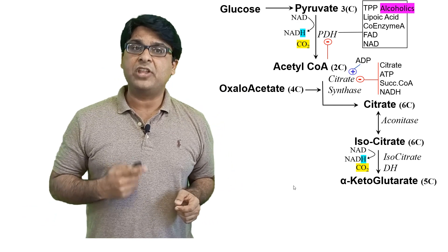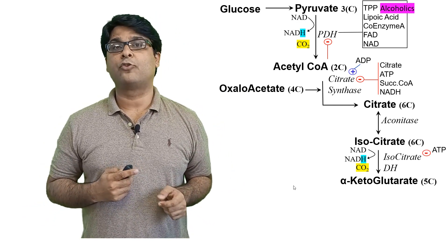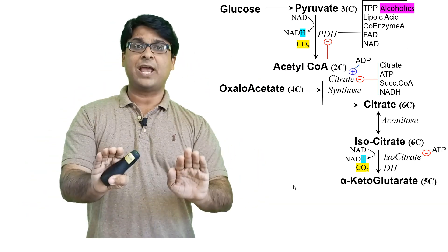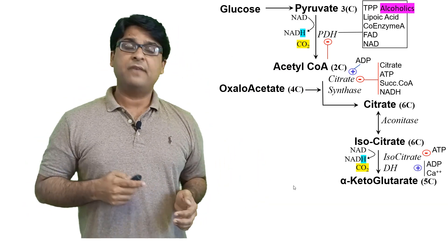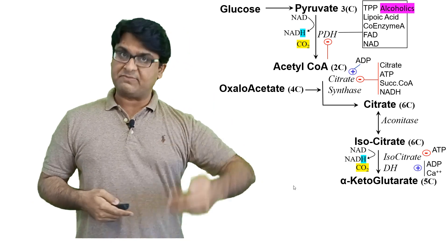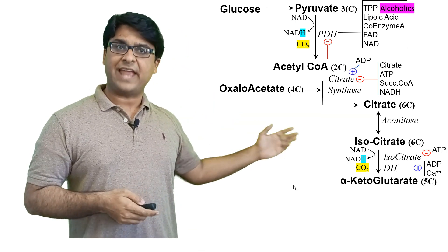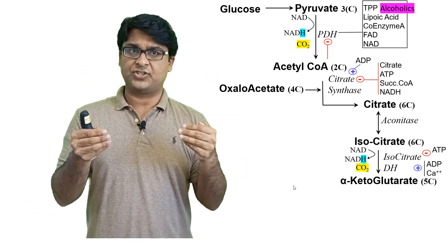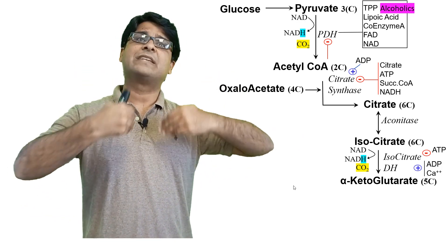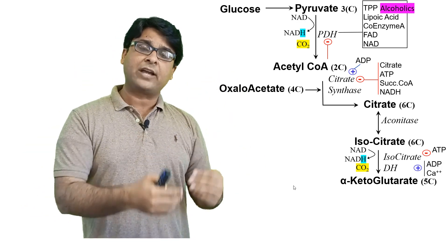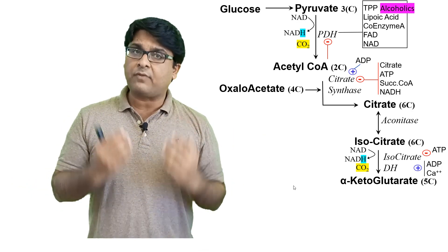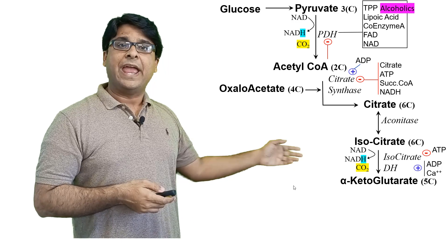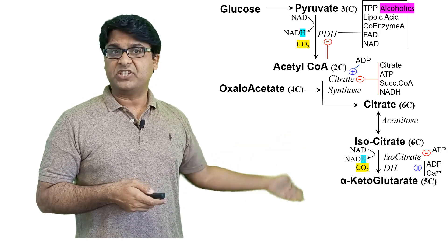Isocitrate dehydrogenase is negatively controlled by ATP and positively controlled by ADP — consistent with the previous step. Calcium is also an activator, particularly in muscle cells: when more calcium is influxed, muscle cells need to contract and therefore require a lot of ATP, so calcium positively regulates energy production through these enzymes.